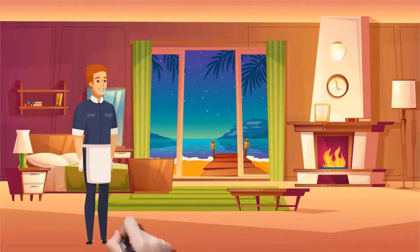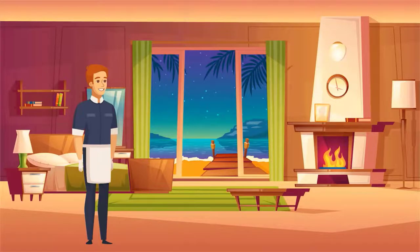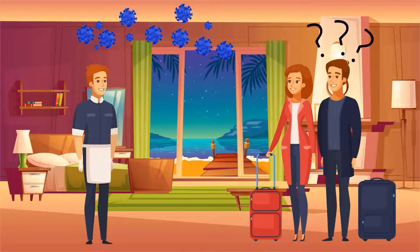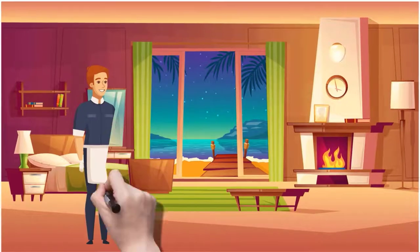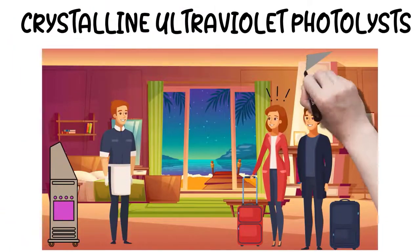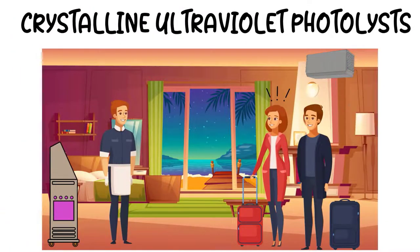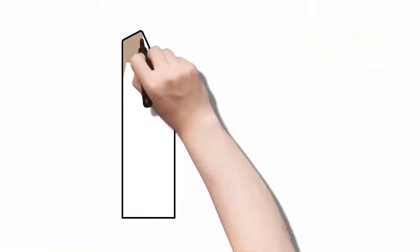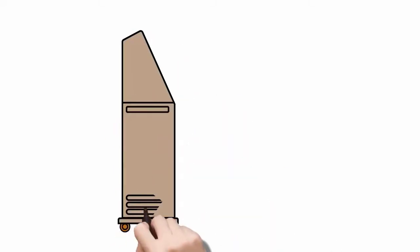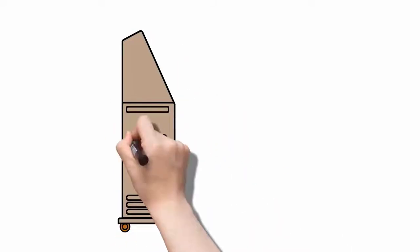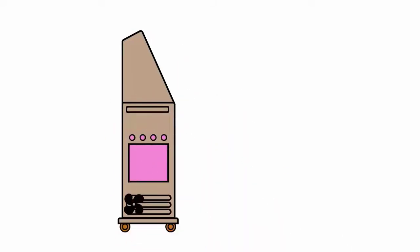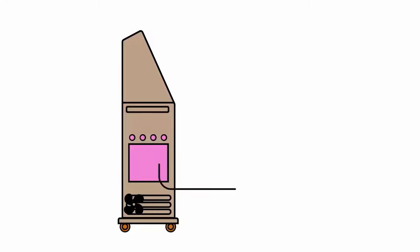So, what's the secret to achieving effective ultraviolet air disinfection rapidly enough to be useful? It's called Crystalline Ultraviolet Photolysis, developed and patented by Aerobiotics. Here is an Aerobiotics air disinfection unit. Dirty air is removed from the environment using a powerful fan and is directed into a box called a UV photolytic chamber.